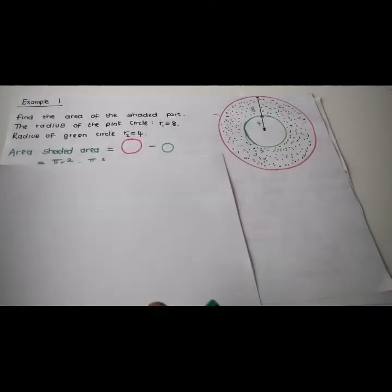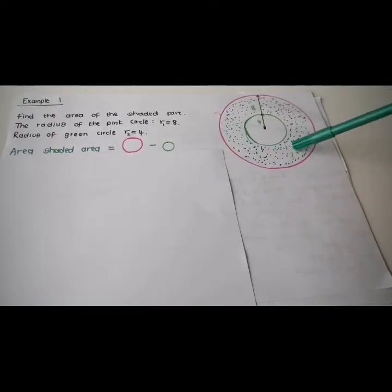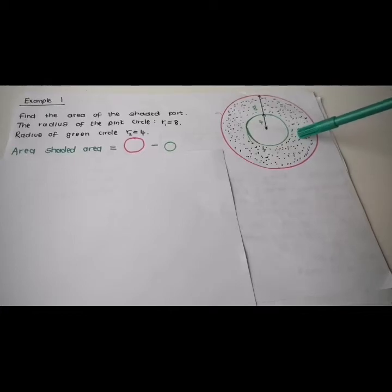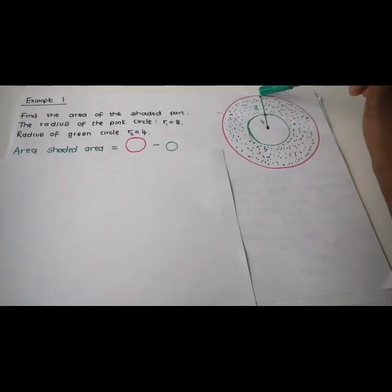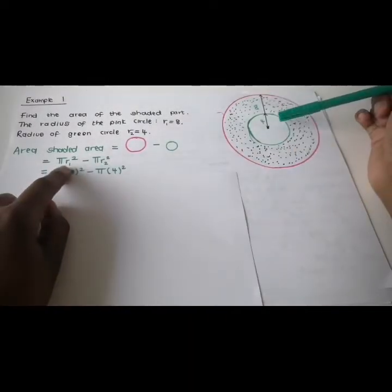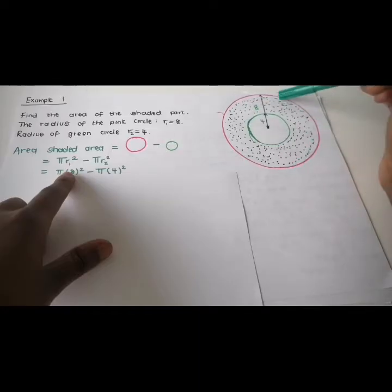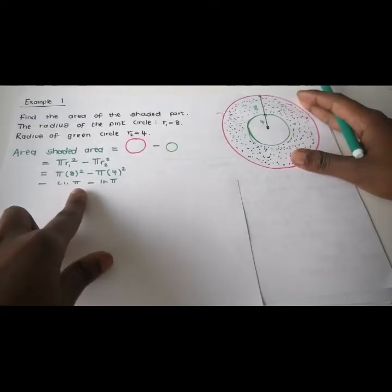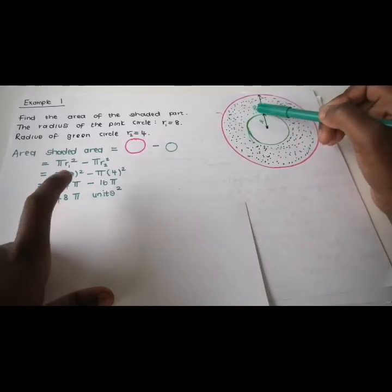What happens when you have a shape within a shape and you're trying to find the shaded region? You have a bigger circle and a smaller circle. You can find the area of the bigger circle and the smaller circle using their respective radii. You subtract the area of the smaller circle from the bigger circle: pi r1 squared minus pi r2 squared. With r1 equal to 8 (the big circle) and r2 as the smaller circle, the area of the shaded region is 48 pi units squared.